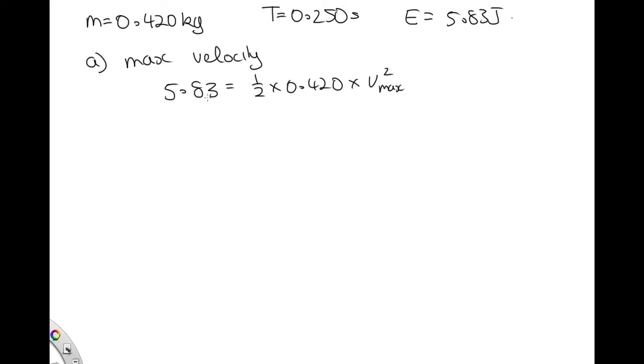So just rearranging this, 5.83 times 2 divided by 0.420 gives us v squared is equal to 27.76. So the maximum velocity is equal to the square root of this, which is 5.26 meters per second.